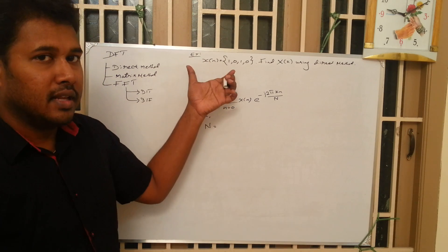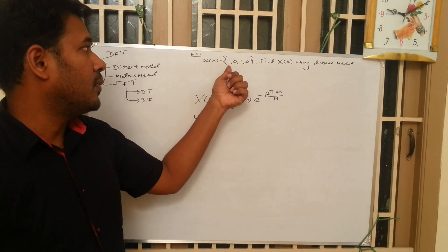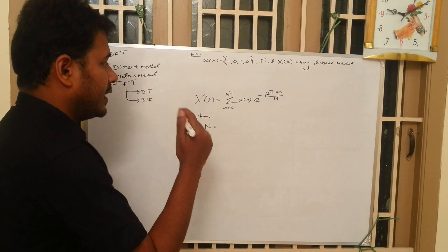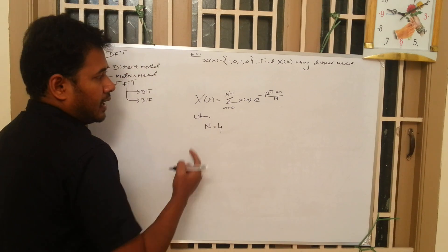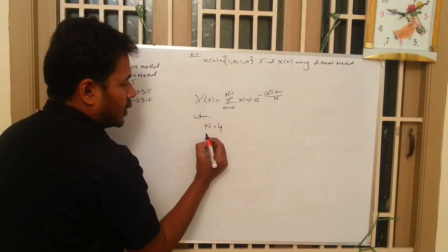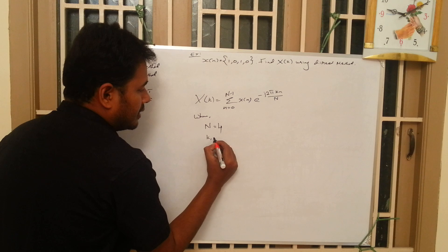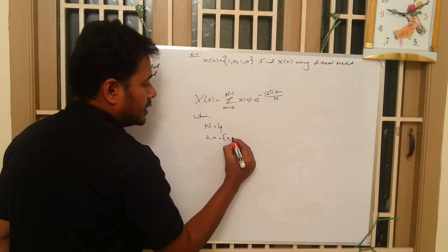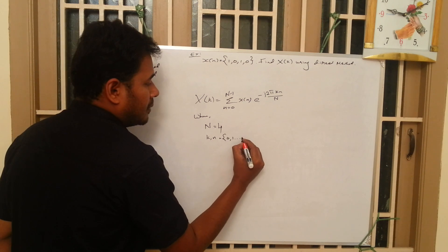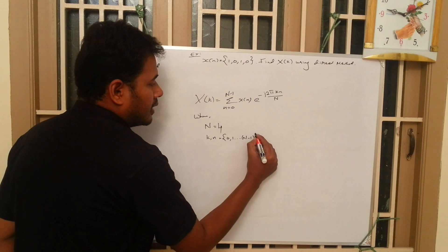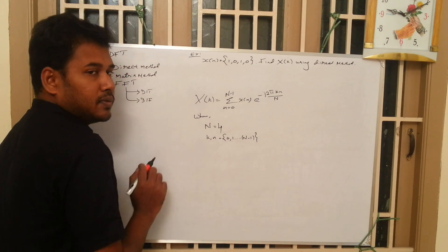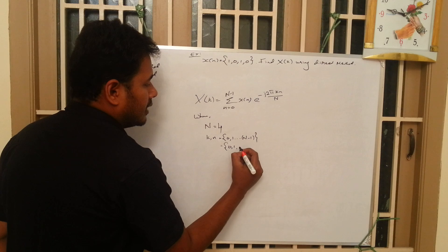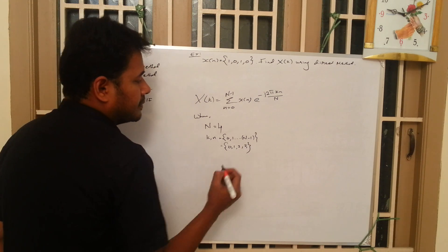Let us take this example: x(n) = {1, 0, 1, 0}, which has 4 elements, so N = 4. Both small k and small n can be found using the formula 0, 1, up to N-1. Since our N value is 4, they are going to be 0, 1, 2, and 3.